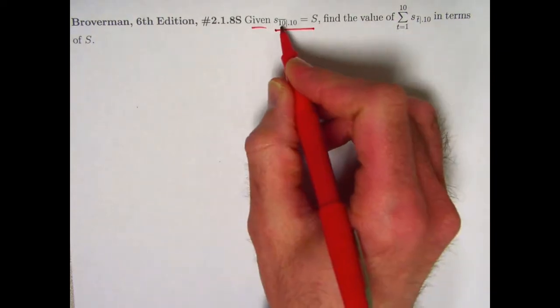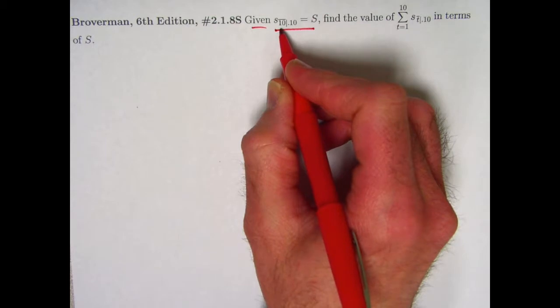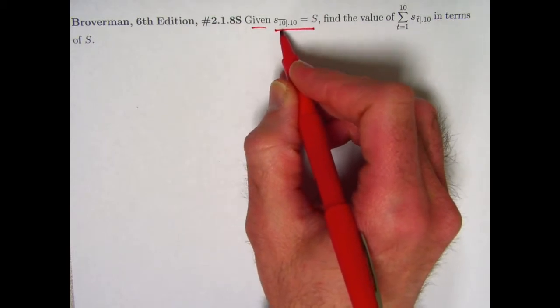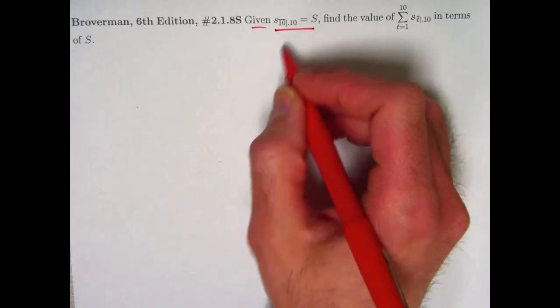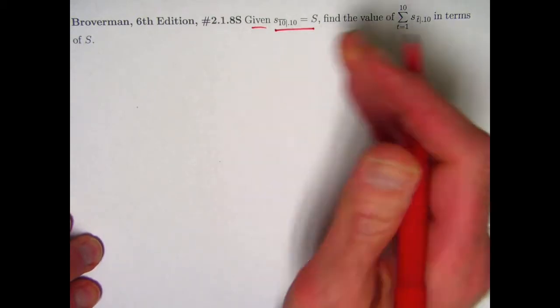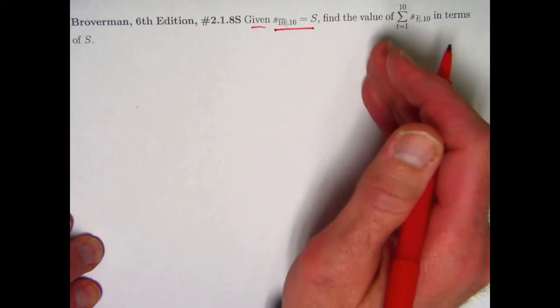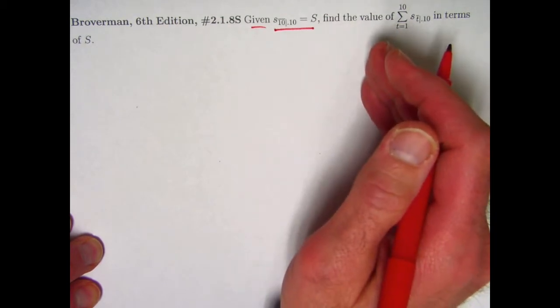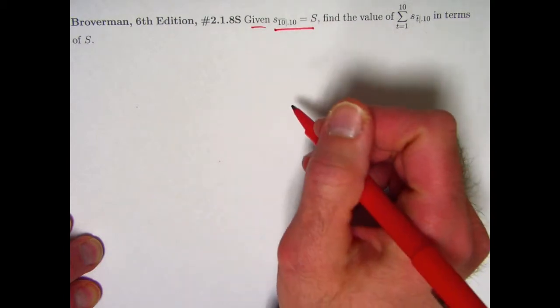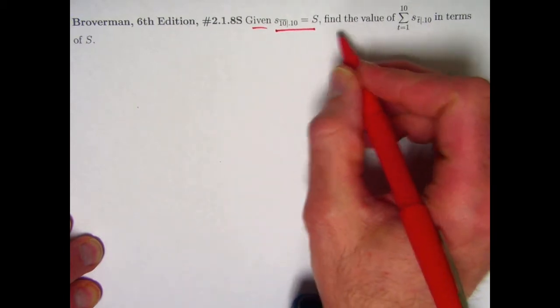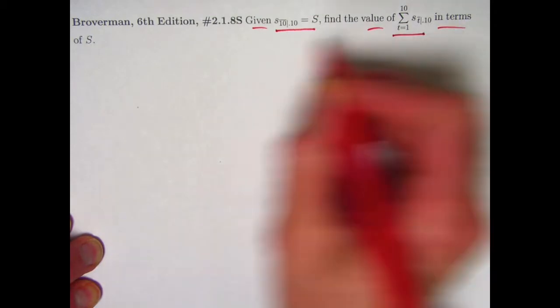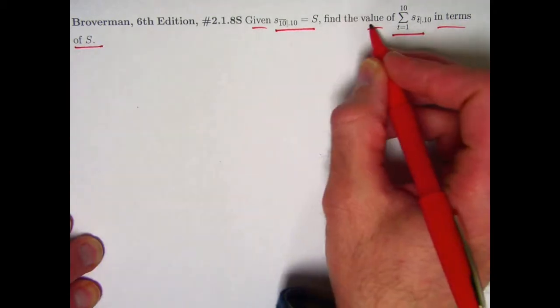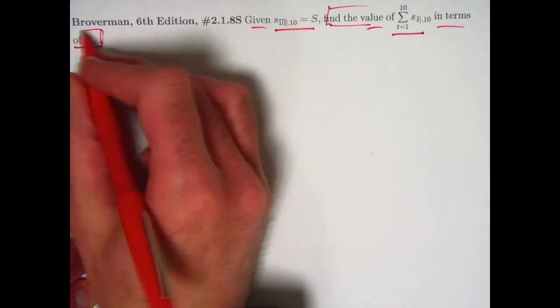Given that this future value of a certain annuity immediate, which is a series of level payments of 1, 10 of them with an interest rate of 0.1, we find that future value immediately after the last payment in the annuity. That's why we call it an annuity immediate. We then want to take that and find the value of the summation in terms of s.